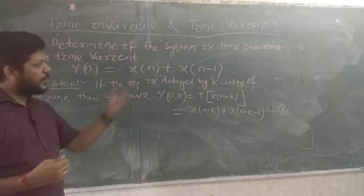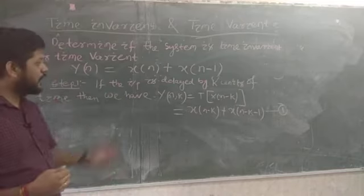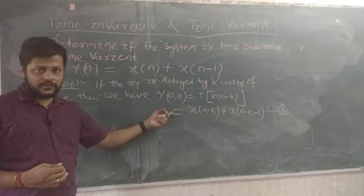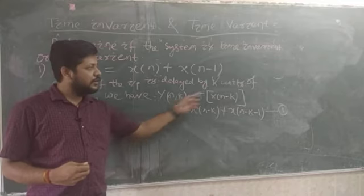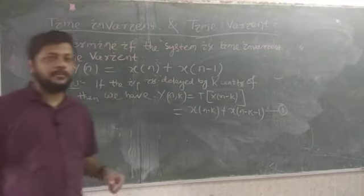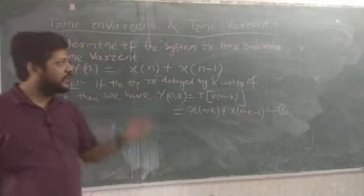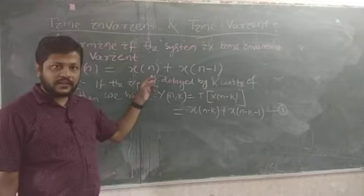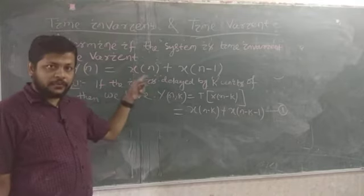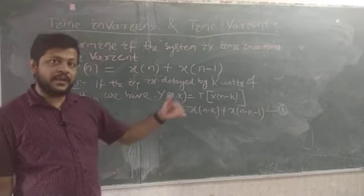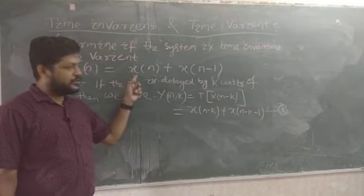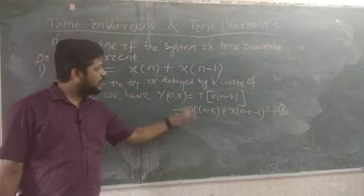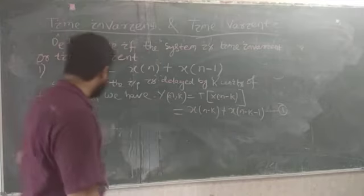Step one: delay the input by k units. The response of the system to the delayed input x(n-k) is denoted y(n, k). Substituting x(n-k) into the equation, we get: y(n, k) = x(n-k) + x(n-k-1). This is equation one.